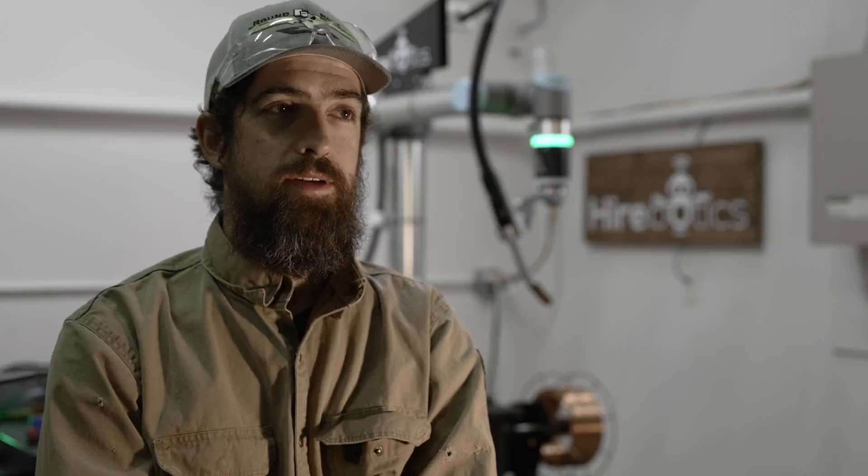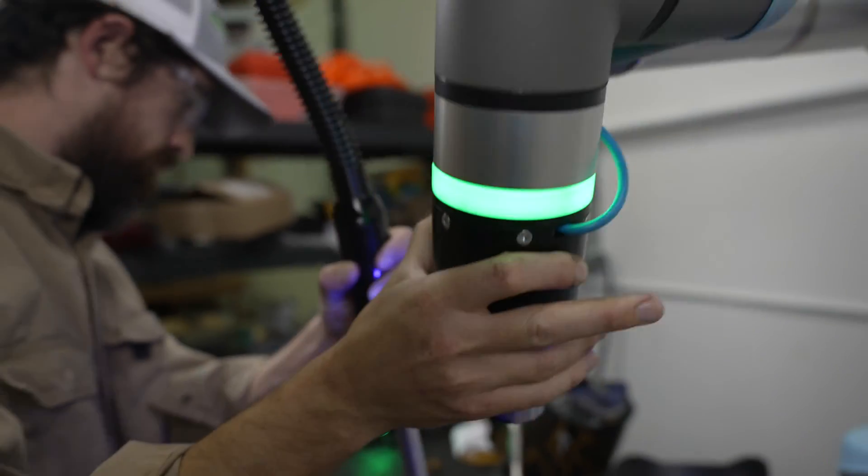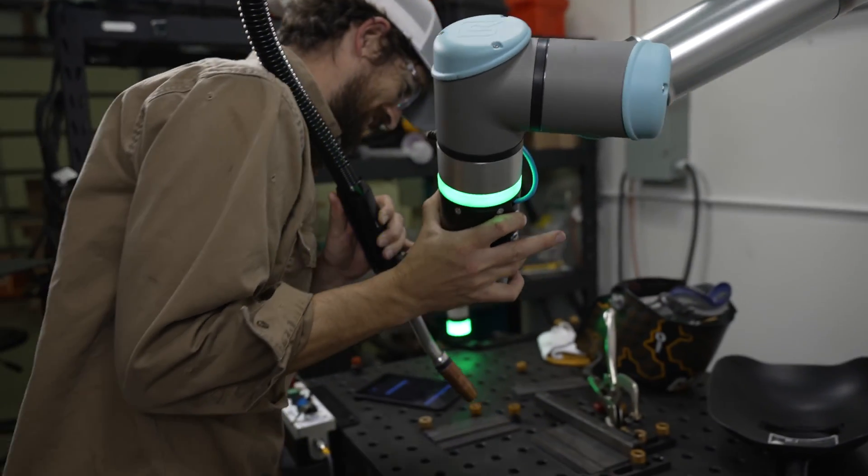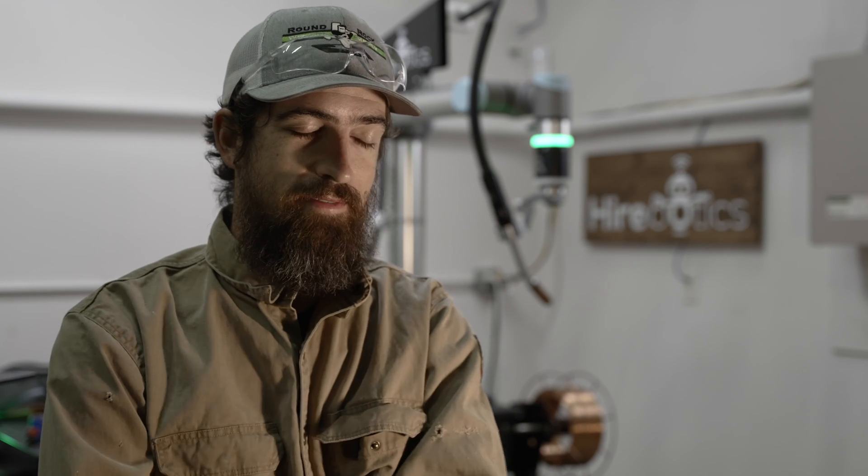Two buttons on the robot get you movement and saving points. It's that simple. The robots that we have now, you need nearly an associate's degree to operate that type of equipment, but this is simple.